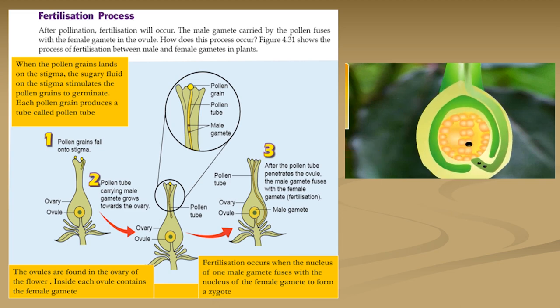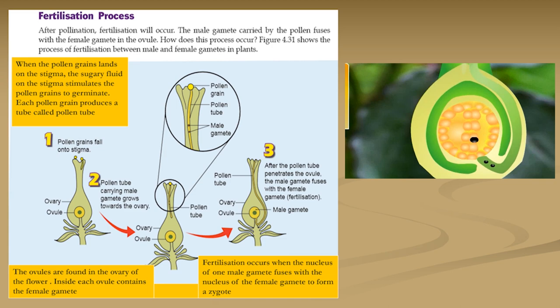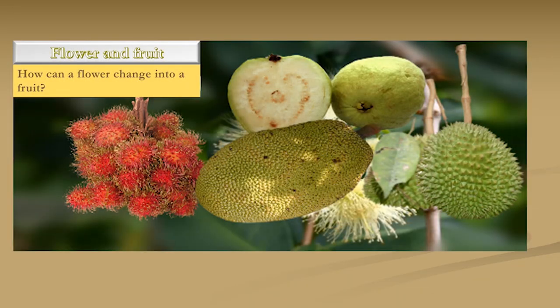When the pollen tube reaches the ovule, the end of the pollen tube breaks and the male gamete is released into the ovule, which contains the female gamete. The male gamete then fuses with the female gamete to form a zygote. Hence, fertilization is said to have occurred. A pollen grain delivers the male gamete to the ovule in the ovary to fuse with the female gamete during fertilization.